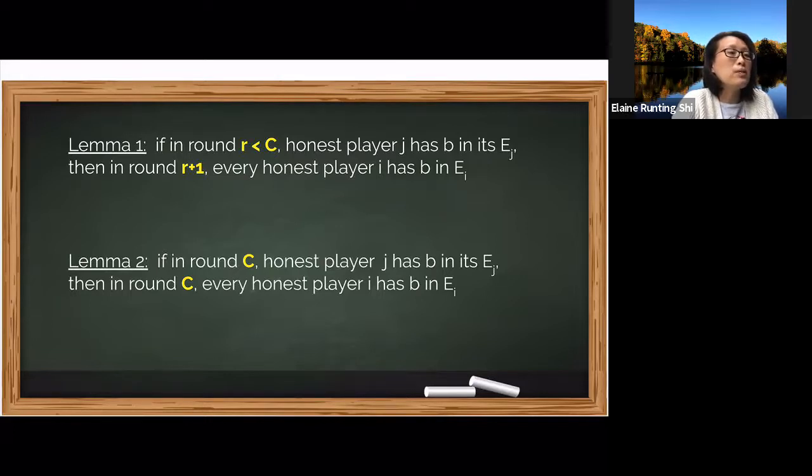Okay, so basically the first lemma says if I have the bit in round r, you'll have it in the immediate next round r plus one. But to finish the consistency proof, it helps to observe that in the last round, something magical happens. If some honest player adds b to its extracted set in the final round, then C people must have signed it. And among them, one player must be honest. So now this honest player must have added b to its extracted set in some earlier round r. And by the first lemma, now everyone must have added b by round r plus one, which is less than or equal to C.